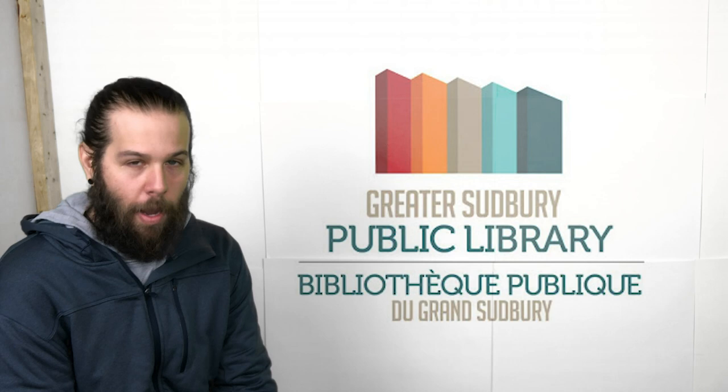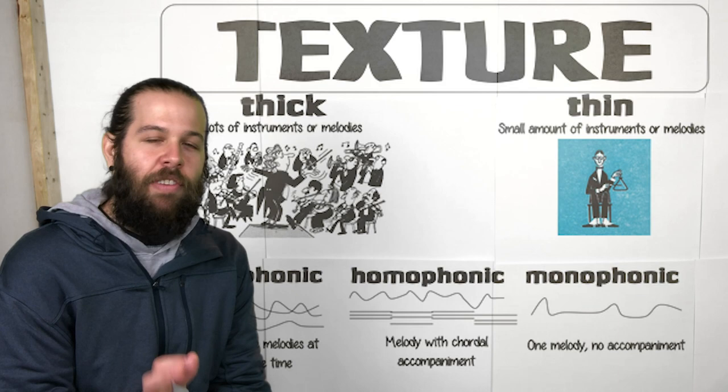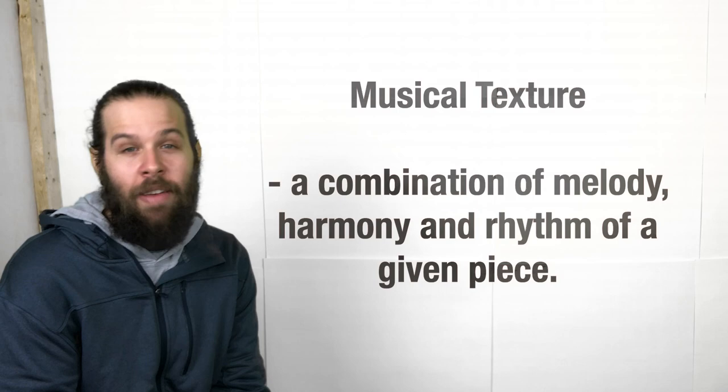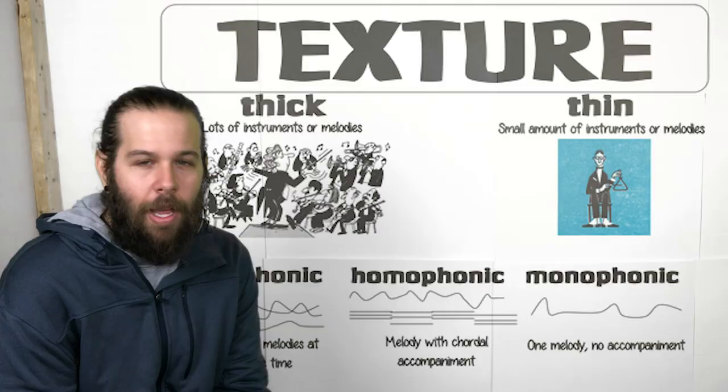Today we're going to talk about musical texture. Let's look at a definition of texture. Texture is a combination of melody, harmony, and rhythm of a given piece. But pretty much everything you're hearing in a song makes up its texture.